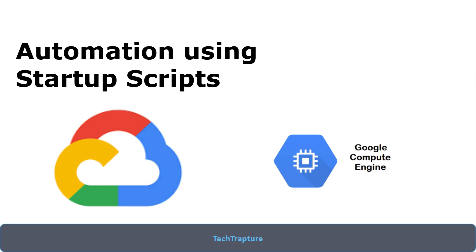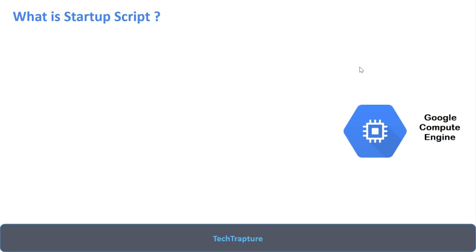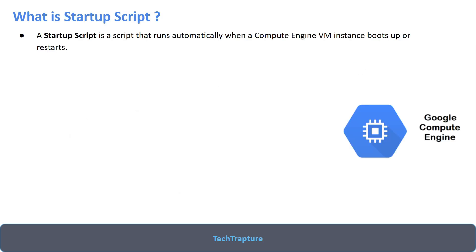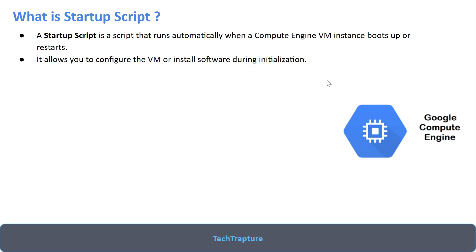A startup script is a script that runs automatically when a Compute Engine VM instance boots up or restarts. When we say boots up, it means when your VM instance is created for the very first time. This is exactly similar to user data in AWS, where the user data script executes when your EC2 instance boots for the first time. It allows you to configure a VM or install software during initialization.